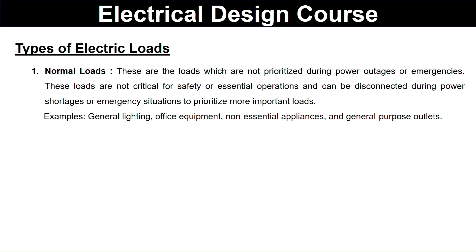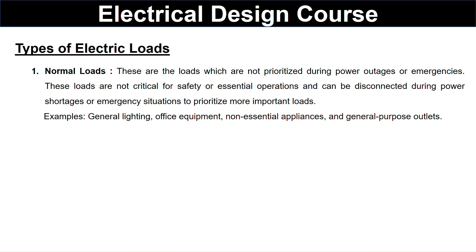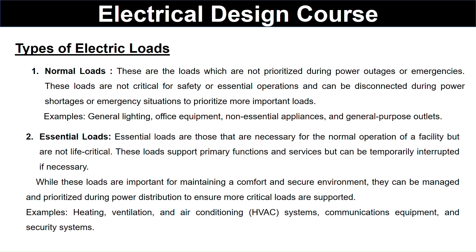Normal loads are the loads which are not prioritized during power outages or emergencies. These loads are not critical for safety or essential operations and can be disconnected during power outages or emergency situations to prioritize more important loads. Examples are general lighting, office equipment, non-essential appliances, and general purpose outlets.